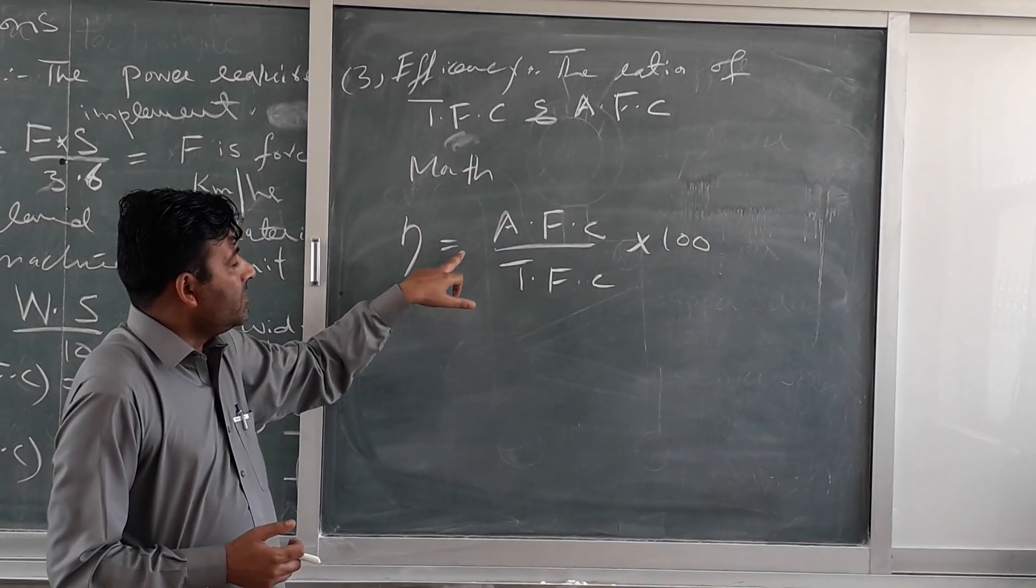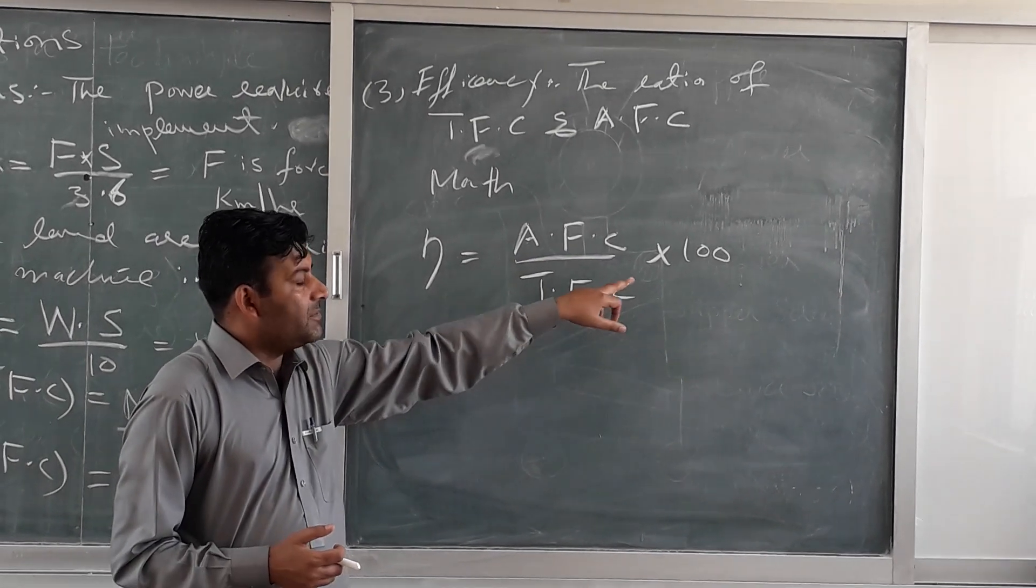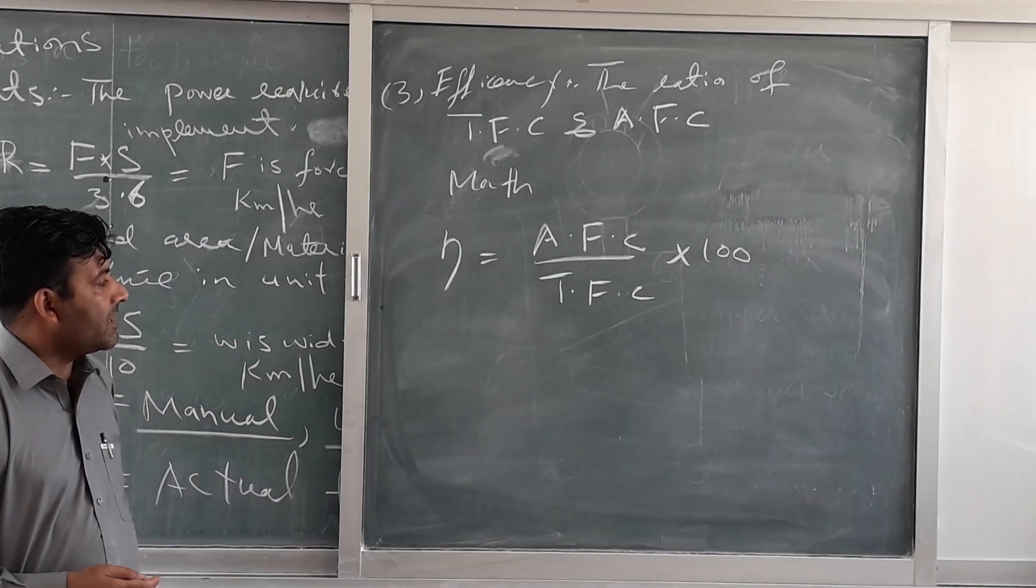Mathematically, eta is equal to actual field capacity divided by theoretical field capacity multiplied by 100.